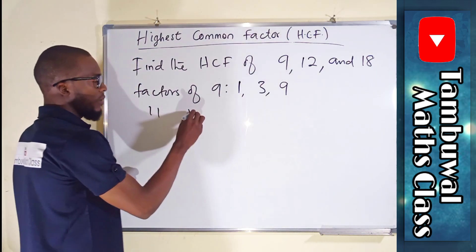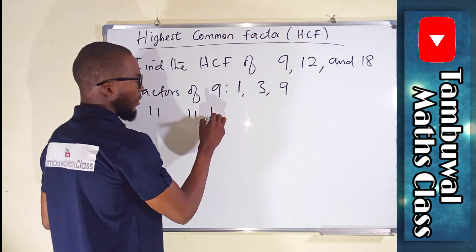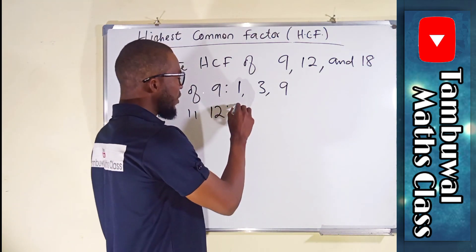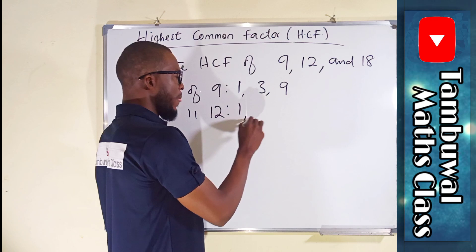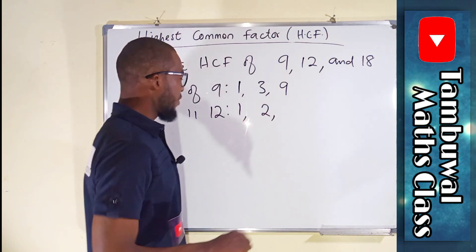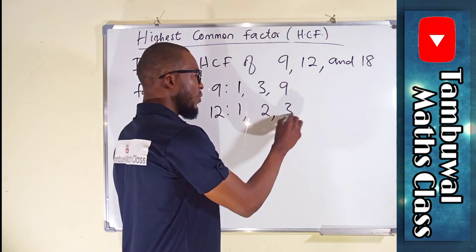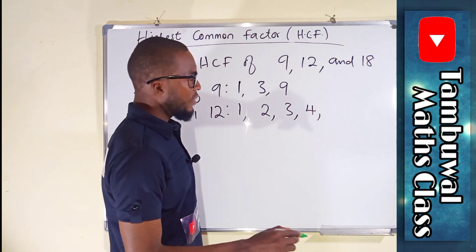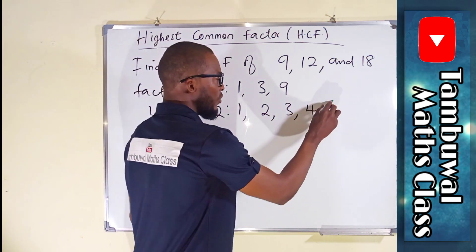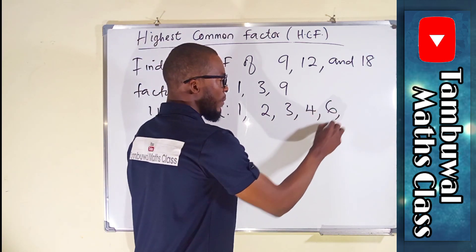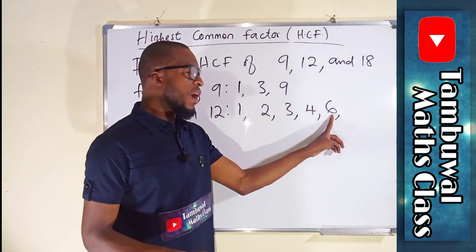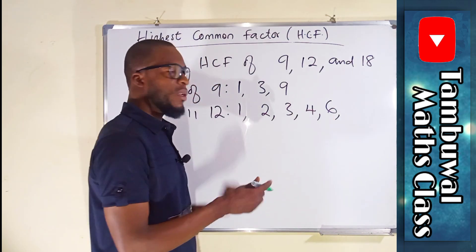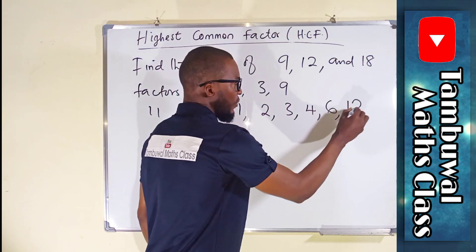For twelve, those numbers that can go into twelve without remainder: we have one, two because it can go six times, three can go four times, four can go three times. Five cannot go, but six can go two times. Once you reach half of that number, the next number will be the number itself — twelve.